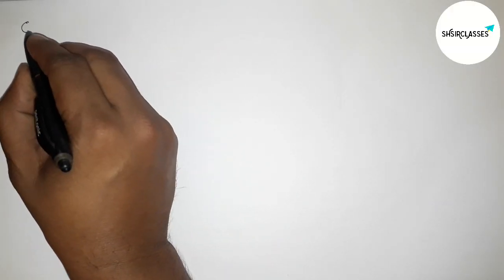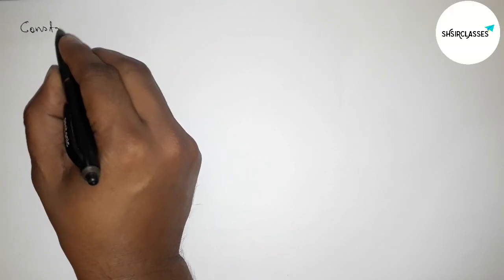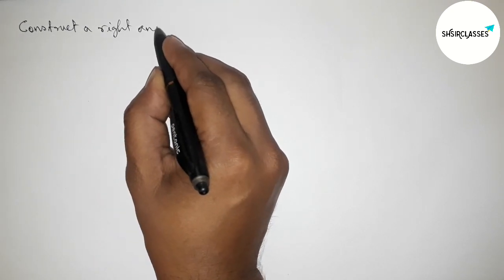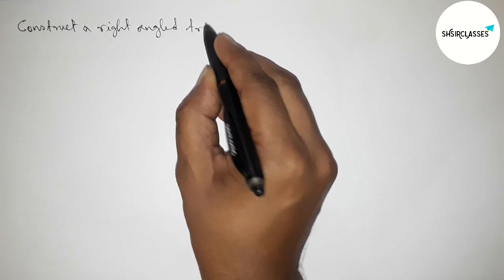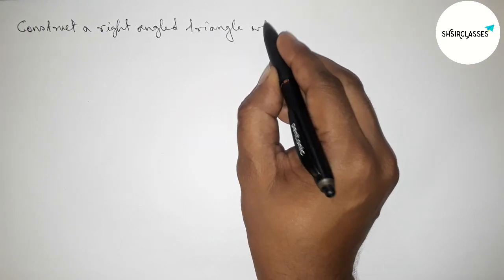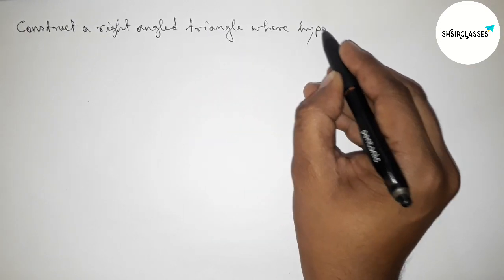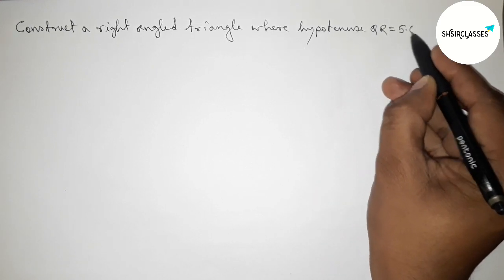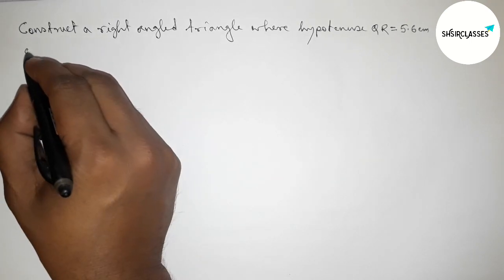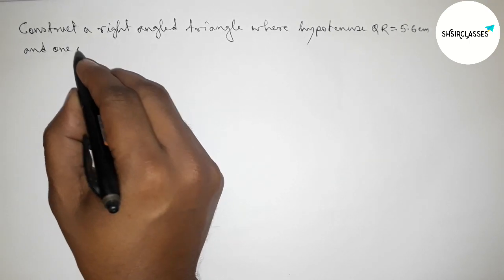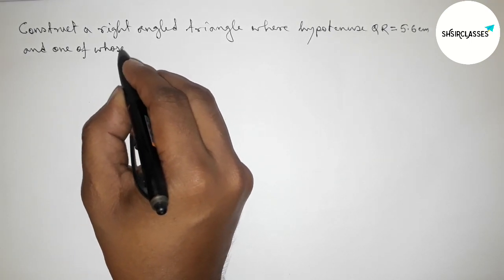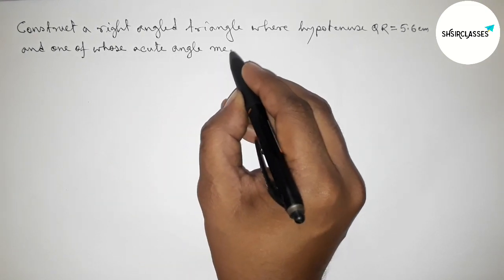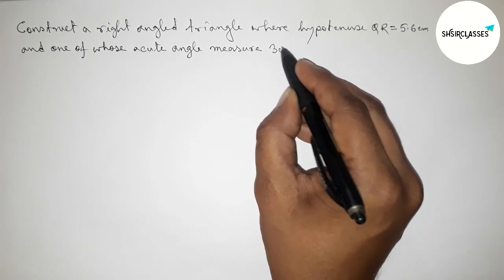Hi everyone, welcome to SI Share Classes. Today in this video we have to construct a right angle triangle PQR where the hypotenuse QR equals 5.6 centimeters and one of the acute angles measures 30 degrees. Please watch the video till the end. Let's start.